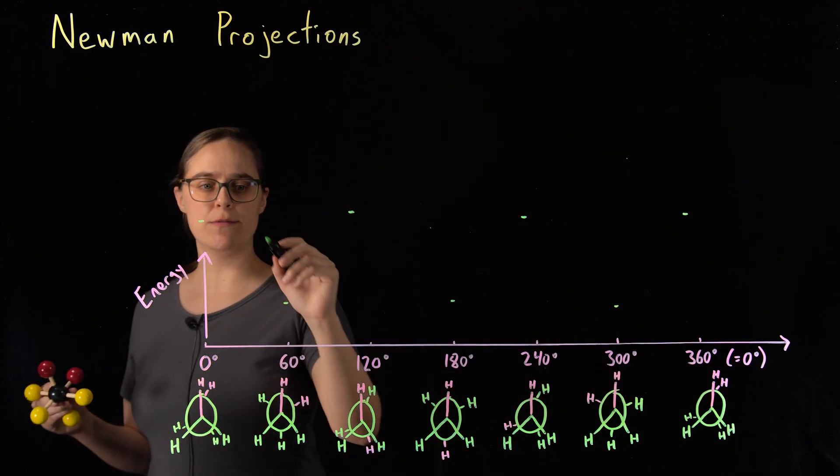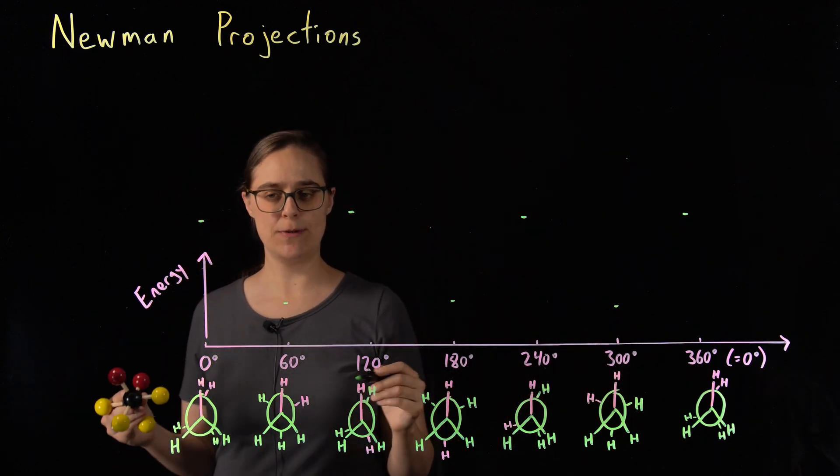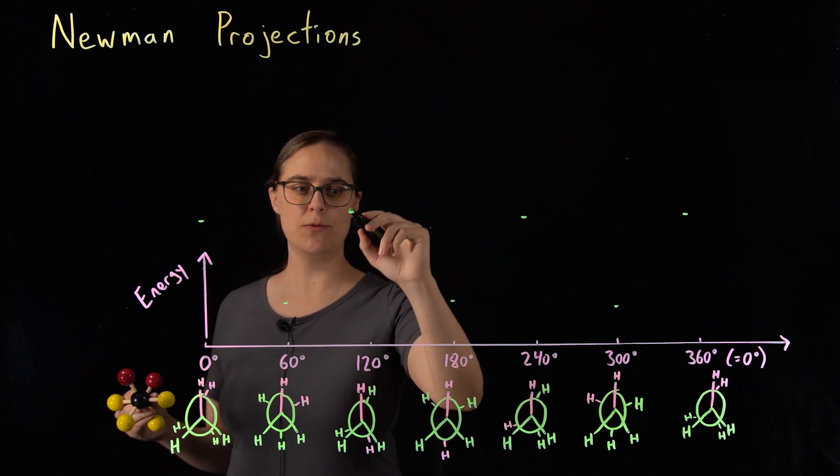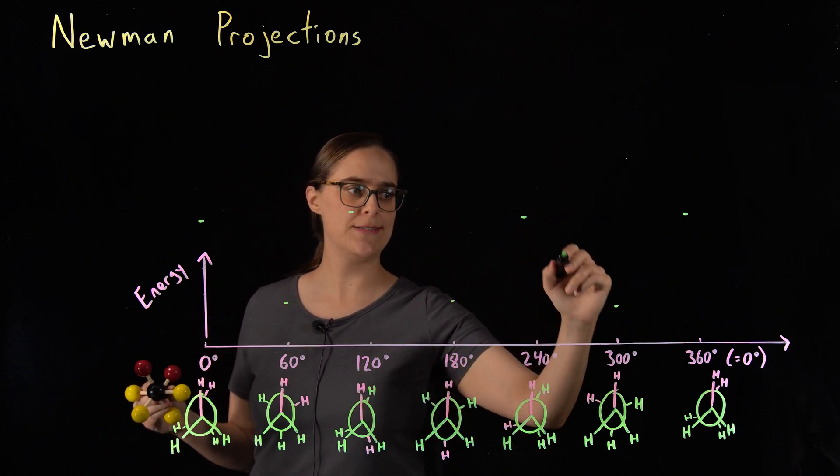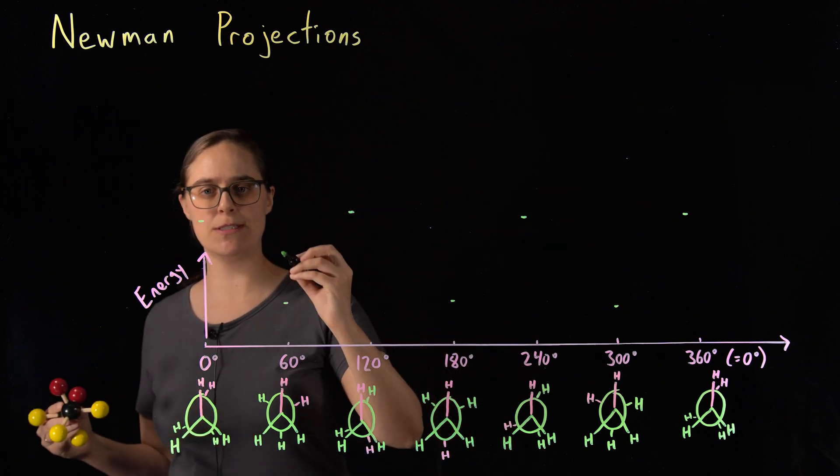So what about all of these conformations in between? This is just going to be a smooth plot that transitions between them. It's going to look something like this.